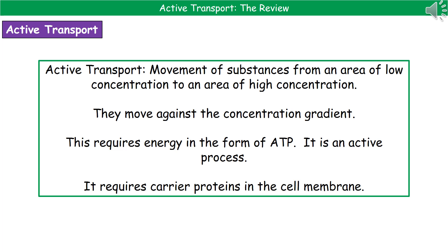That's the key point that makes this different from osmosis and diffusion, because if you think back to our reviews on those, both osmosis and diffusion move down the concentration gradient — they go from high to low concentration — whereas active transport is the opposite, going from low concentration to high concentration. Because of that, this process actually requires energy in the form of ATP, making it what's called an active process.